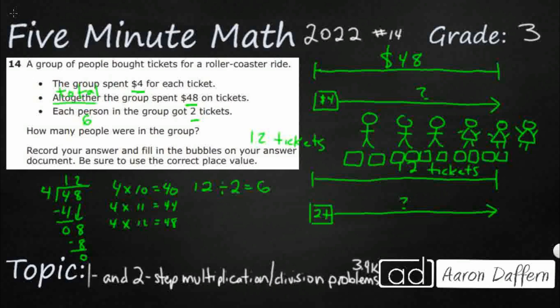And then each ticket is four bucks. So four, eight, 12, 16, 20, 24, 28, 32, 36, 40, 44, 48. So yeah, four bucks a ticket. I got 48 bucks. Each person's got two tickets. So it looks good.